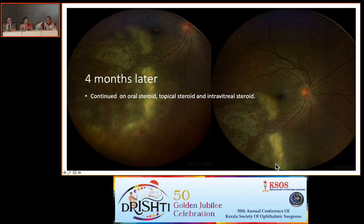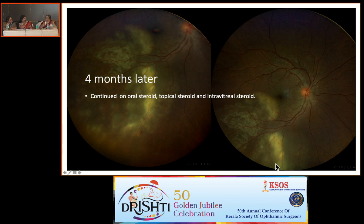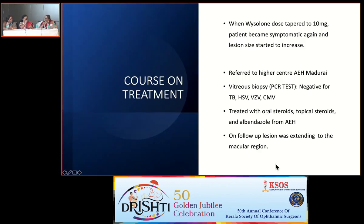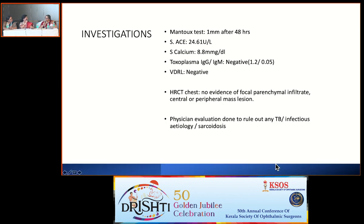Since the biopsy was negative, the only other thing I might have done is go for a Quantiferon TB Gold, but I would have gone for immunosuppression in this case. Regarding any role for ATT — since the two biopsies were negative, I would go straight for immunosuppression.